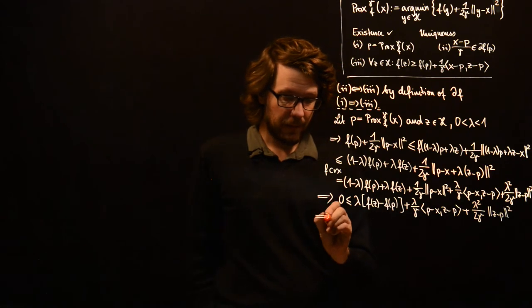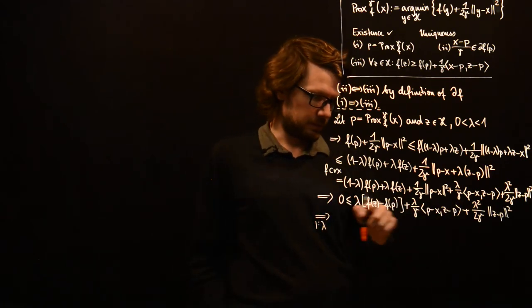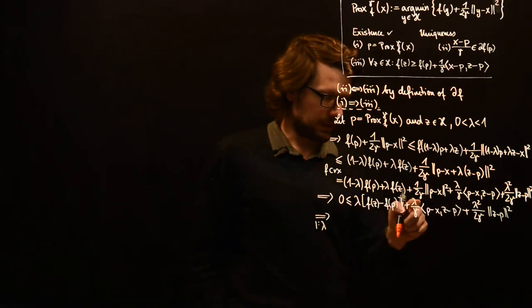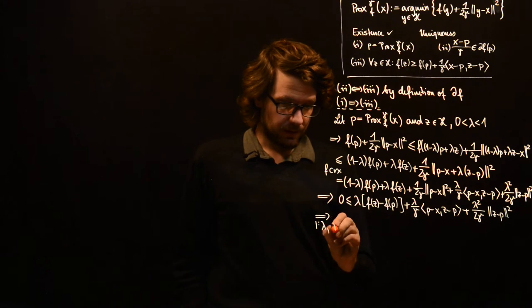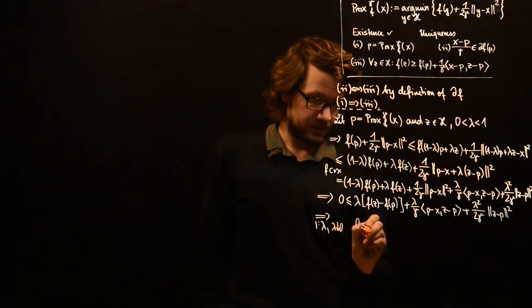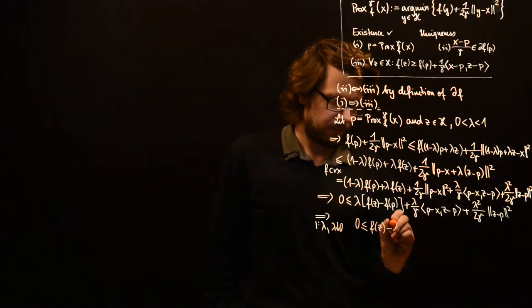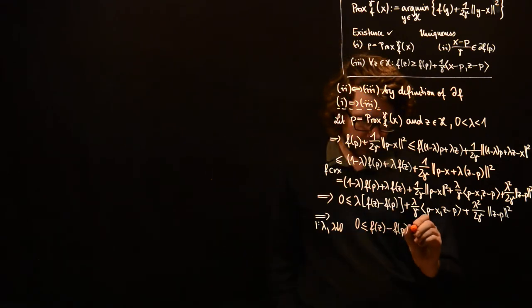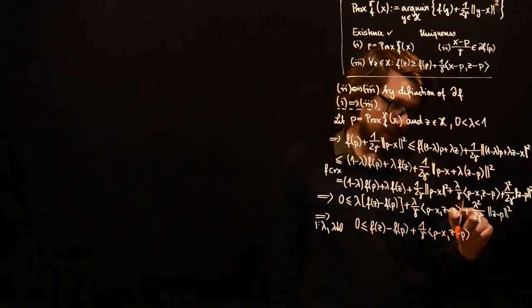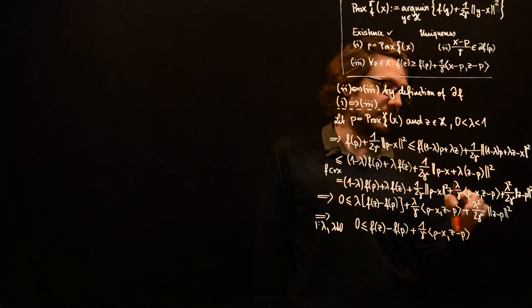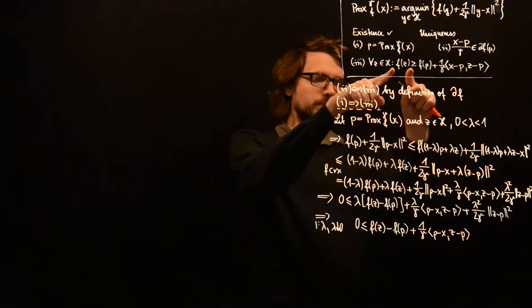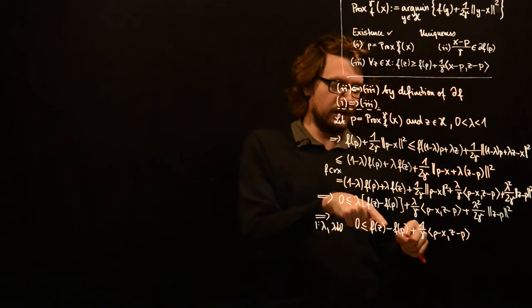Now if we divide by lambda — this lambda goes away, this lambda goes away, and lambda squared becomes just lambda — then we let lambda converge to 0. We obtain 0 is less or equal than f of z minus f of p plus 1 over gamma times p minus x times z minus p. The remaining lambda terms go to 0. So what we have obtained is: f of z is greater or equal than f of p plus 1 over gamma times this inner product.